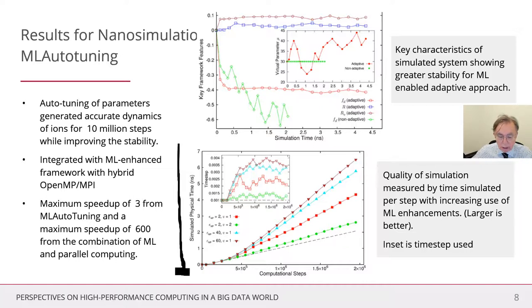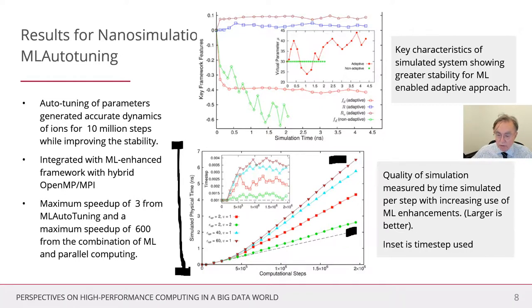The first result shows progress in time by dynamically changing the time step, which you do in molecular dynamics. If you make it too big, you get inaccurate answers; if too small, you spend too much time. The default is one millionth of a nanosecond — that's this progress shown here, which in two million computational steps gives you a nanosecond of simulated time. With the dynamic choice of time step, you can do three times better than that, with different machine learning choices shown and the brown as the optimal value.